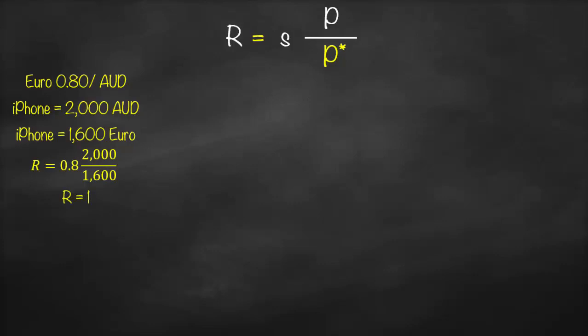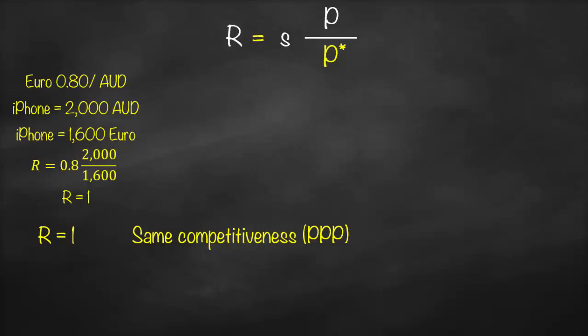This gives us a real exchange rate equal to 0.8 multiplied by 2,000 divided by 1,600, which equals one. Therefore, our benchmark for the real exchange rate is one. A value of one means that the two countries have the same competitiveness — the same purchasing power price and purchasing power capacity. This means that when we take into account price differentials and the exchange rate, both countries have equivalent competitiveness.